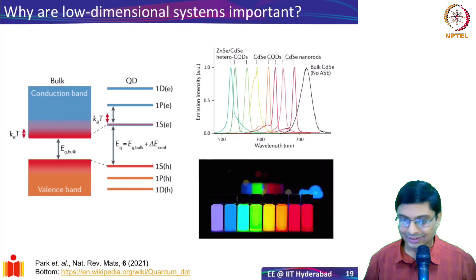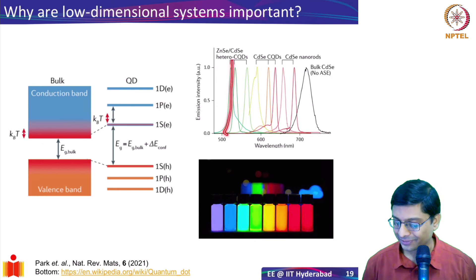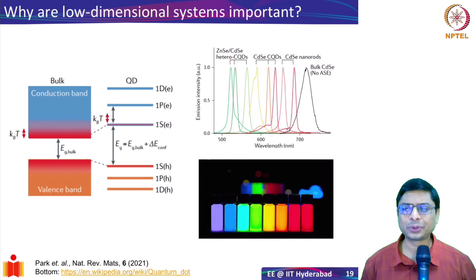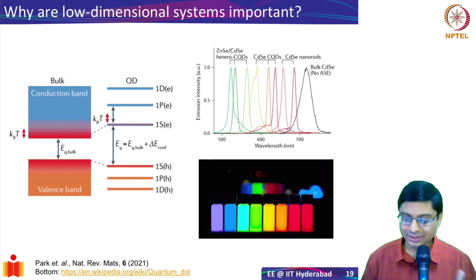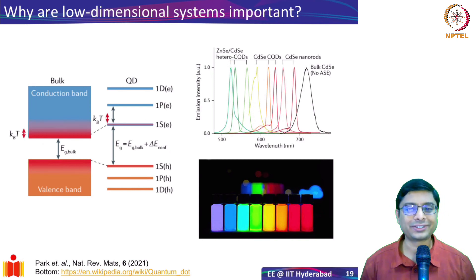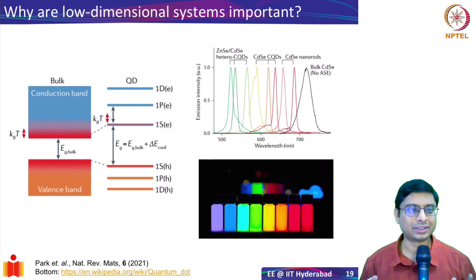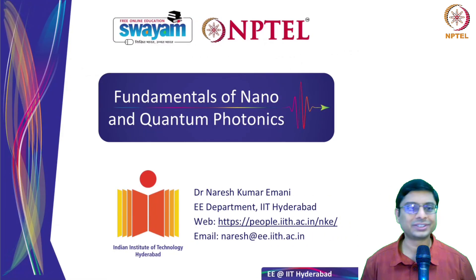This brings us back to the original motivation: why are low-dimensional systems important? Because you can tailor the emission peaks. The photoluminescence peaks shift because the band gaps are changing, and that gives you light at different colors. This fine control over light emission properties makes them critical. In week four we'll see plasmonic structures, which also allow some tuning of resonances, but nothing beats semiconductors — quantum dots in particular — for controlling light emission.